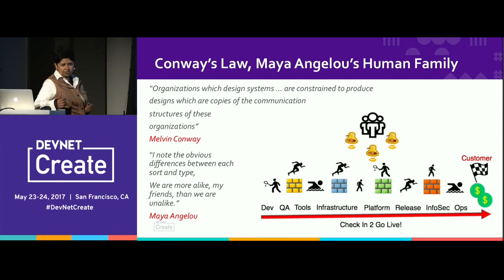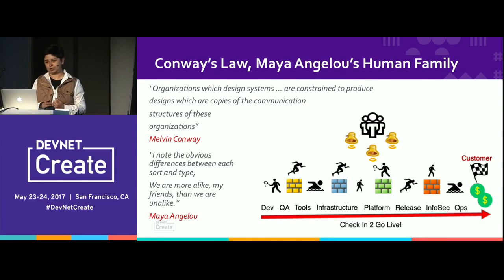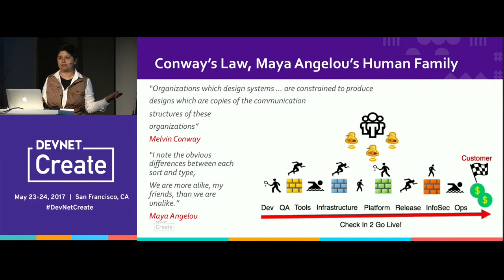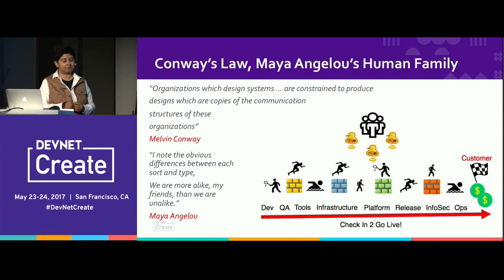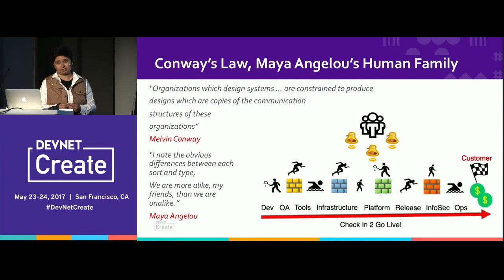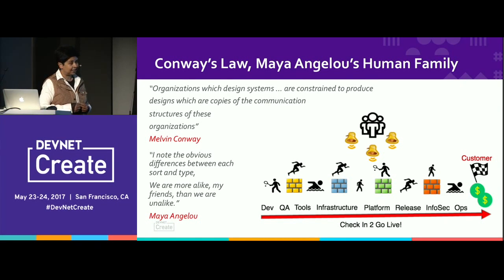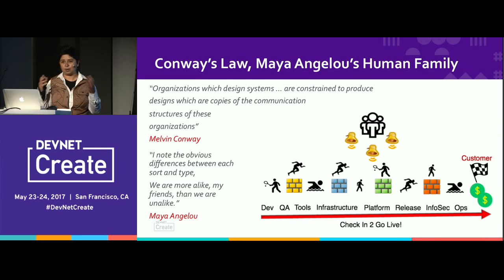What does Maya Angelou say in this context? I've probably never seen Conway and Maya Angelou on the same slide in a tech conference. She says: 'I note the obvious differences between each sort and type. We are more alike, my friends, than we are unalike.' So how does all this boil down to DevOps?